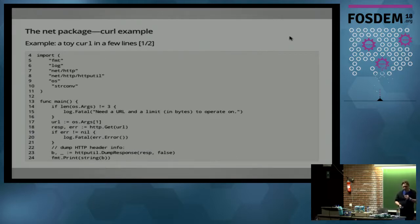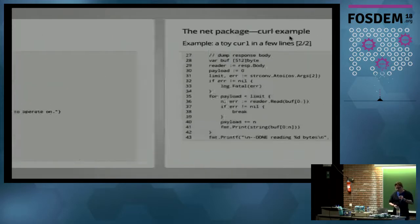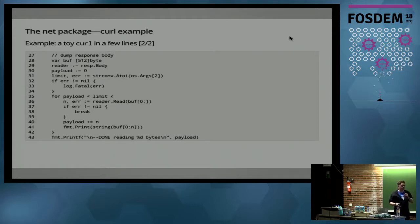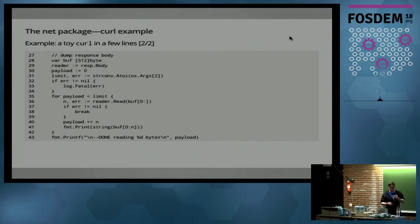Obviously curl has a few more features, but this already shows you the power of the standard library. The second part pulls out the content from the body, and in this case the example allows you to specify the amount of payload in bytes that you actually want to display — just to show you how you can read only partial responses.